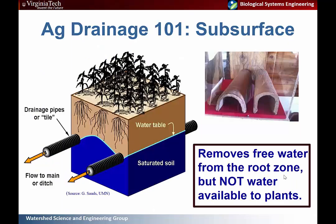Transitioning to subsurface drainage — these systems are typically referred to as tile drains. Pictured in the top right are the old-fashioned terra cotta clay tile; today they're more often made of perforated plastics, although there are many different materials to choose from.